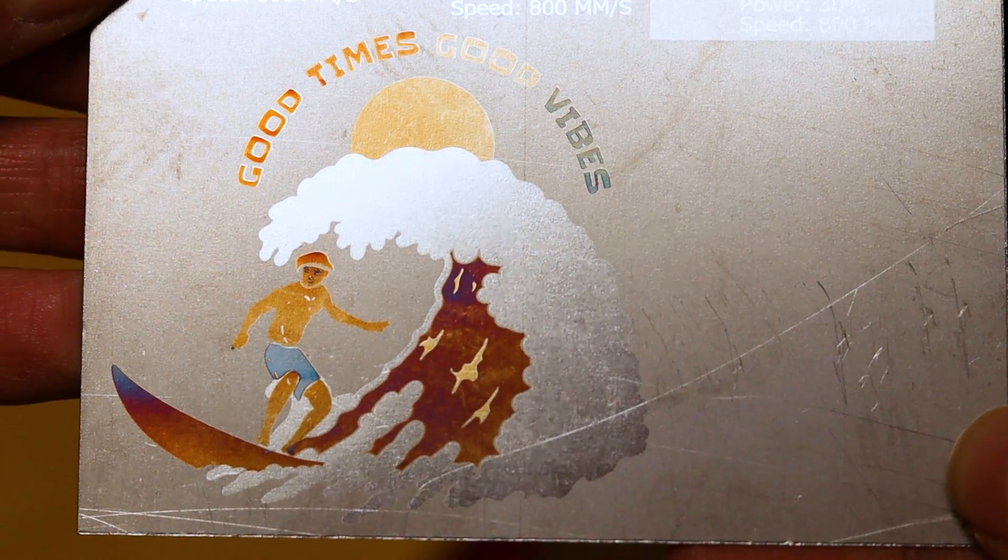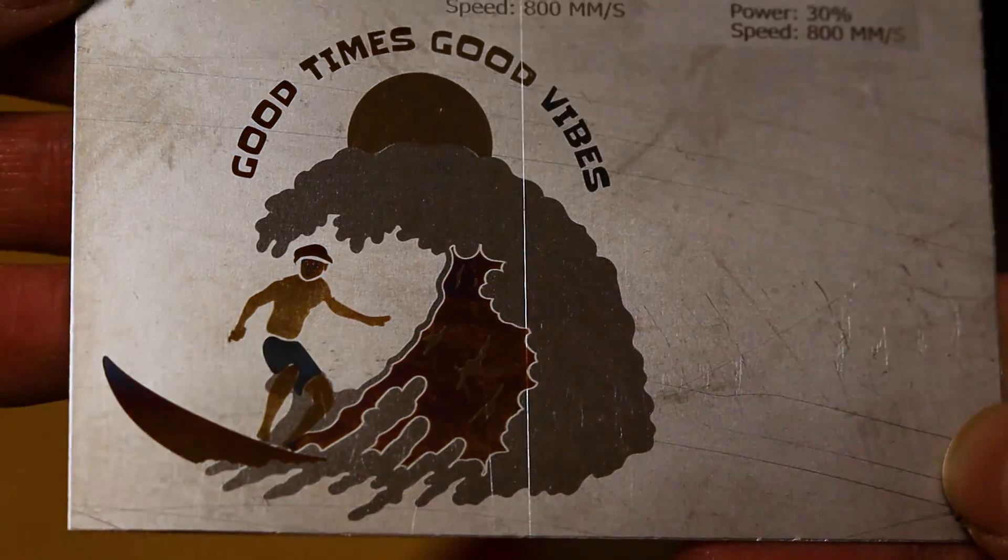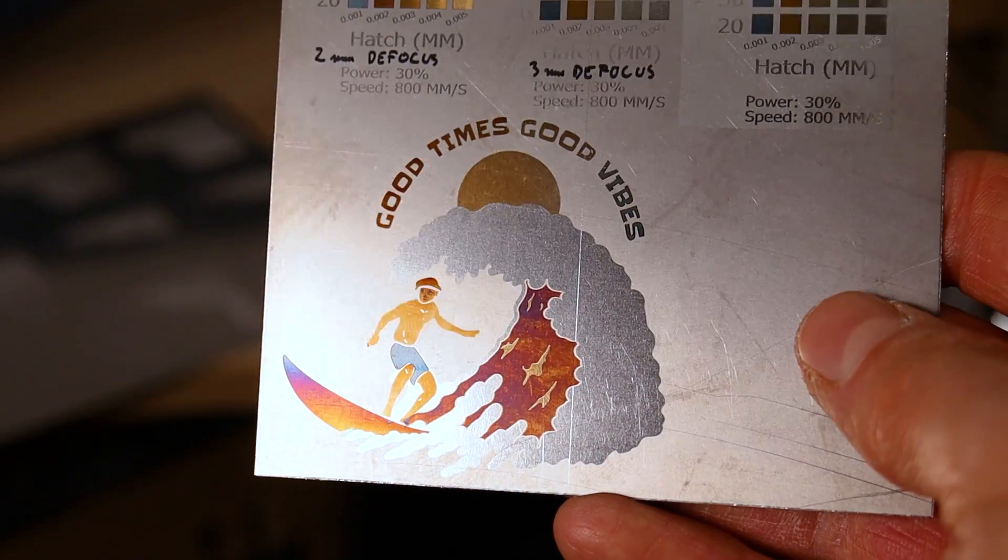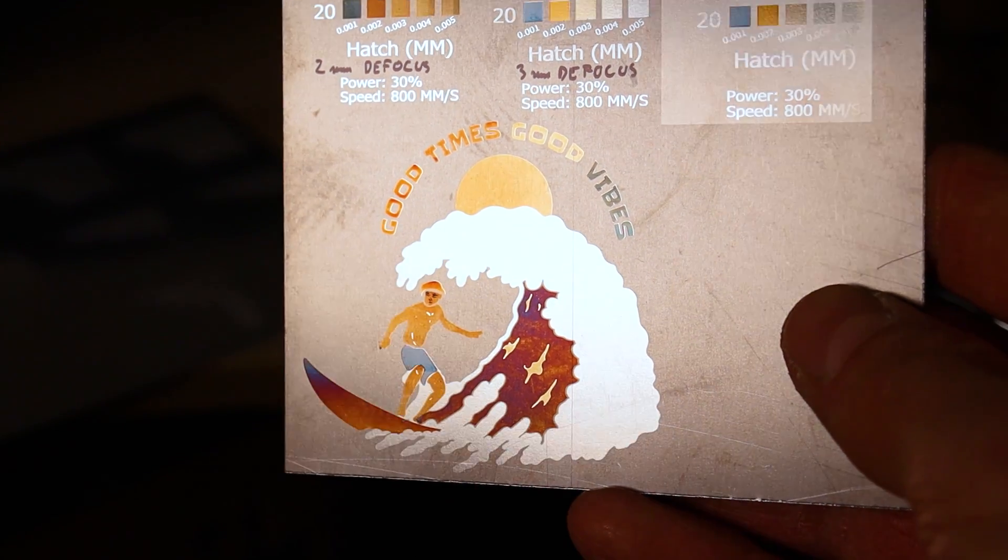But the colors are very hard to get right as the color heavily depends on the defocusing distance. This is why the color of the wave behind the surfer is red instead of blue in this engraving. But it is still very cool.